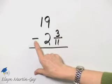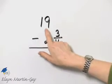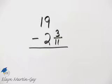Let's perform this indicated operation. I've got the whole number 19 minus the mixed number 2 and 3 elevenths.